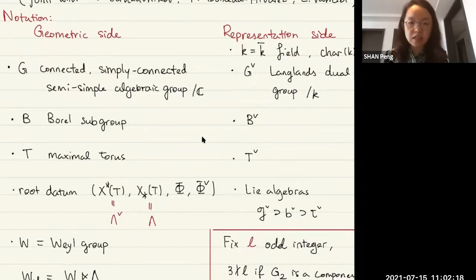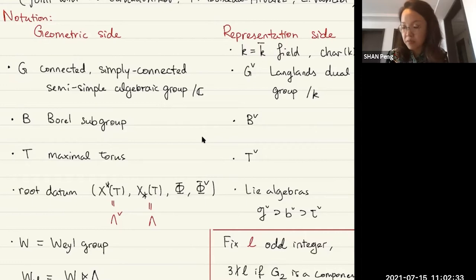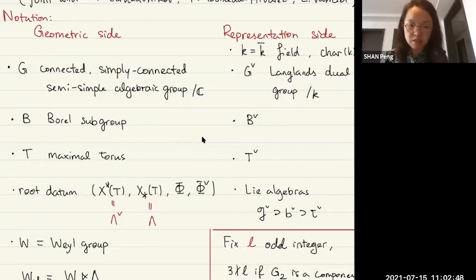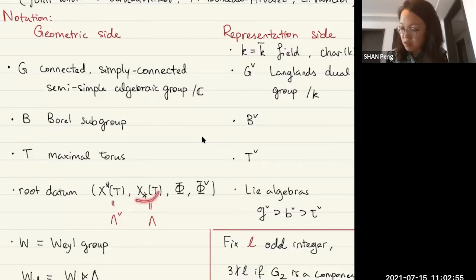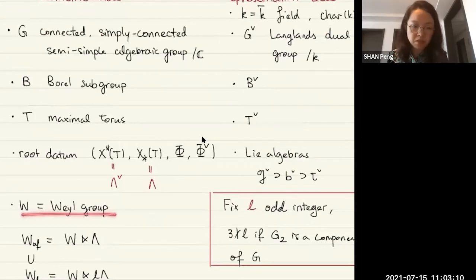Let me fix some notations. On the geometric side, I will work with a connected, simply connected, semisimple algebraic group defined over ℂ, which I'll call G. I'll fix a Borel subgroup B inside G, and the maximal torus T inside B. I'll denote the root datum by the character lattice for T, the co-character lattice, Φ the set of roots, Φ-check the co-roots, and λ for the co-character lattice. λ-check for the character lattice. We have the Weyl group W.